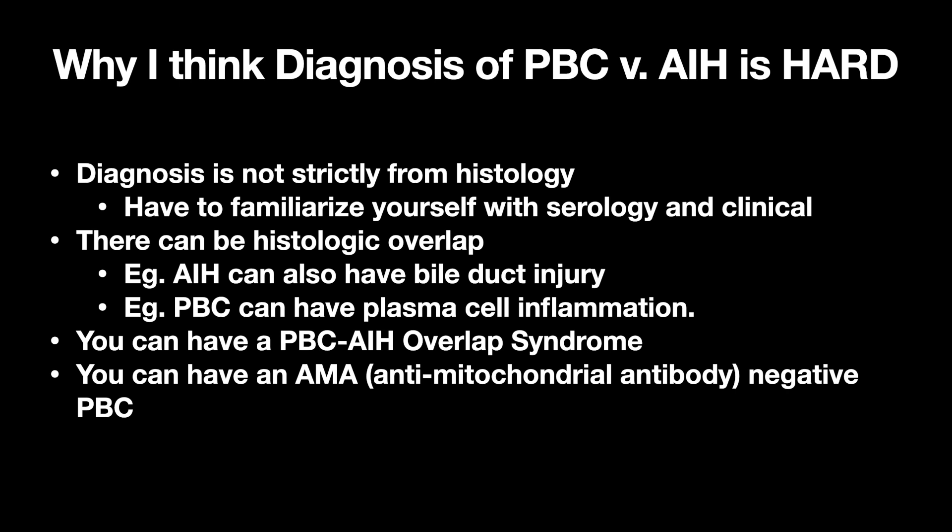Why do I think differentiating them is hard? Because diagnosis is not strictly based on histology — you have to familiarize yourself as a pathologist with serology and clinical information. There can be histologic overlap: autoimmune hepatitis can have bile duct injury, and primary biliary cholangitis can have plasma cell inflammation. You can also have a PBC-AIH overlap syndrome, and you can have an antimitochondrial antibody negative PBC.